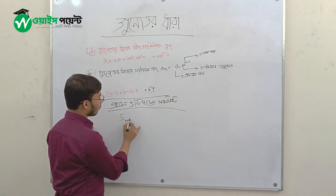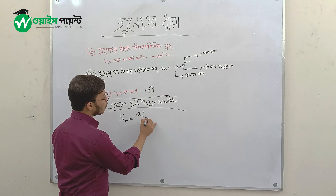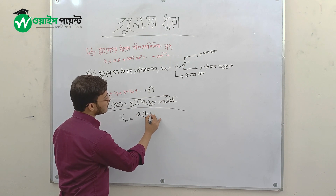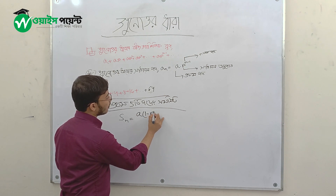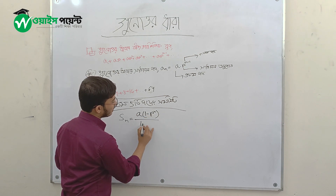And that's: S is equal to a into 1 minus r to the power n, divided by 1 minus r.